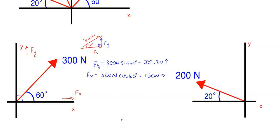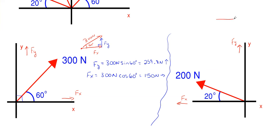We're going to repeat that process for the 200 and 400 Newton forces. The 200 Newtons is up and to the left, angled at 20 degrees off of the X. Since it's going up and to the left, FY has to go upward and FX has to go to the left. Drawing the force triangle and copying FY to complete it, FY equals 200 times the sine of 20 degrees, giving 68.4 Newtons upward. FX equals 200 times the cosine of 20 degrees, giving 187.9 Newtons to the left.